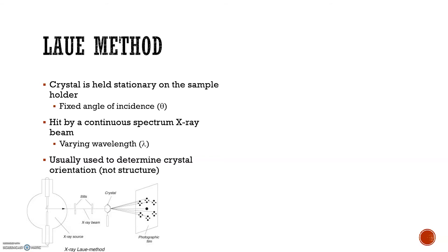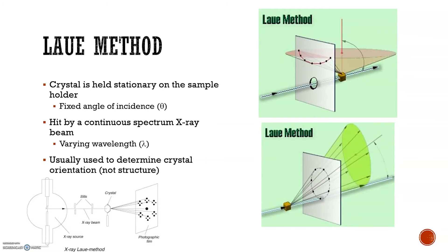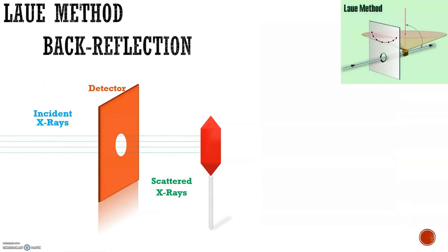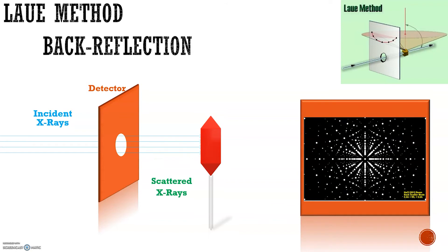There are two subcategories of the Lau method: the back reflection method and the transmission method. In the back reflection method, the film is placed between the X-ray source and the crystal. The beams which are refracted in a backward direction are then recorded by the detector. One side of the cone of Lau reflections is defined by the reflected beam. The film intersects the cone with the diffraction spots generally lying on a hyperbola. The image shown here is an example of a back reflection film from sodium chloride.